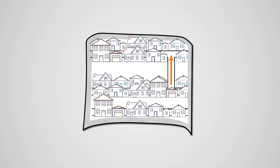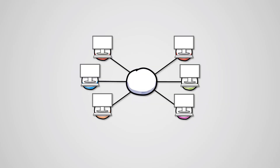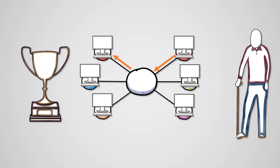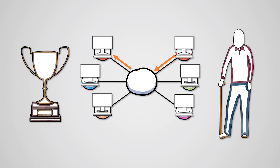Some cities have one-way streets so traffic can only go in one direction. Network topologies are just like this. Data can only flow in certain ways in each topology. Some topologies are better than others and some are out of date and only exist because of historical reasons.